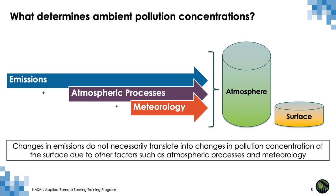Now let's look at the factors which control the concentration of pollutants both in the atmosphere and at the surface. Number one is emissions — it can be both natural and anthropogenic. Second is atmospheric processes, which includes physical and chemical processes to produce and remove pollution from the air. Third is meteorology or weather conditions, which can affect both emissions, atmospheric processes, as well as concentration directly. Therefore, information and understanding of these three components is necessary to determine and forecast pollution concentration at the surface.